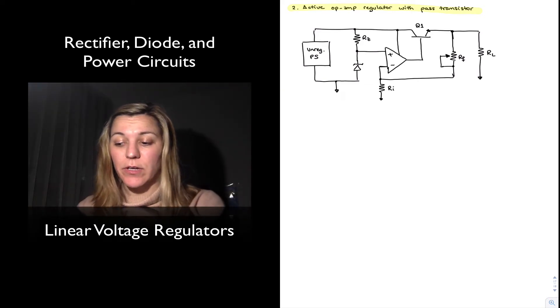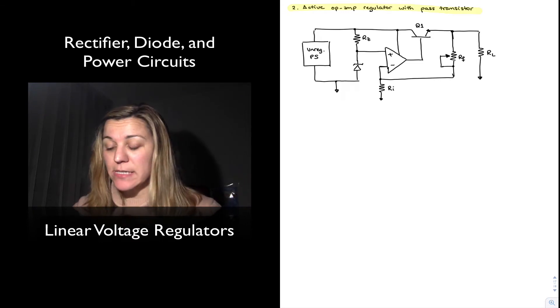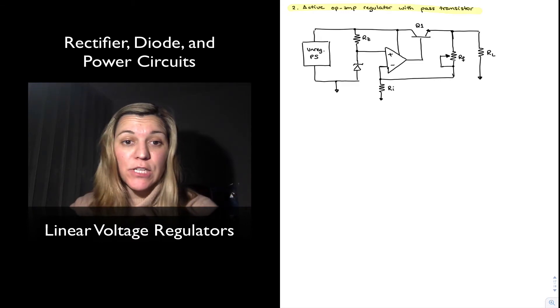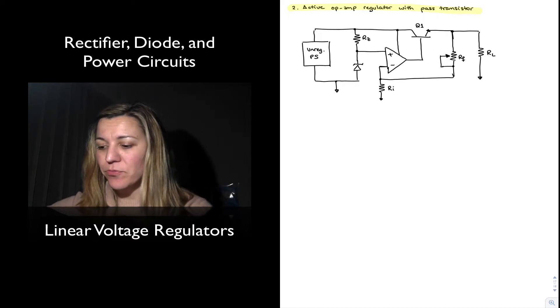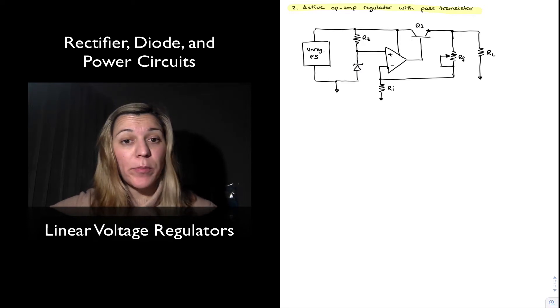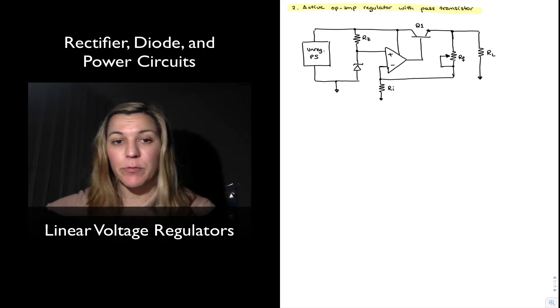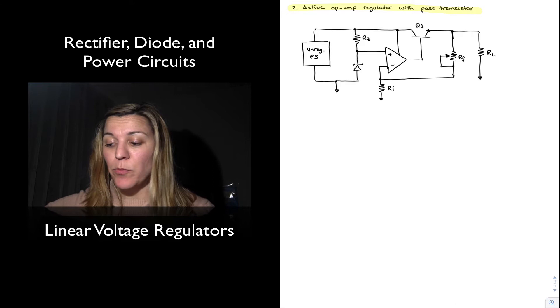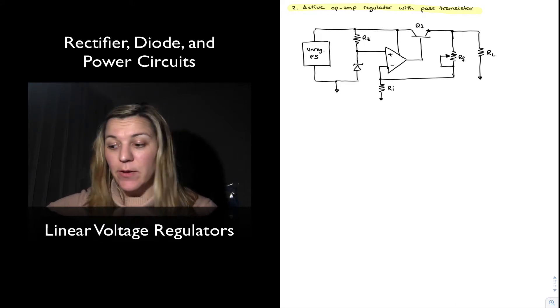So here we have an active op-amp regulator where I have added a pass transistor, which I've labeled as Q1, and notice that I have added it in series with the load. So basically, instead of the op-amp output now providing the load current, the load current is coming from the unregulated power supply through the pass transistor to the load, and the only thing that the op-amp is providing current for is the base of that transistor.